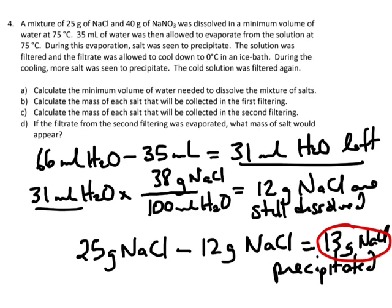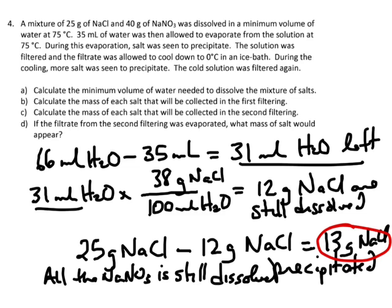How much sodium nitrate would have been collected? We could do the same calculation, or we could just reason: since 28 mils of water was needed to dissolve all the sodium nitrate — calculated in Part A — we still have 31 mils of water, which is more than enough. So all the sodium nitrate is still dissolved; no sodium nitrate will precipitate and no sodium nitrate is collected in the first filtering. The only thing collected is the sodium chloride — very similar to what we did in our experiment.